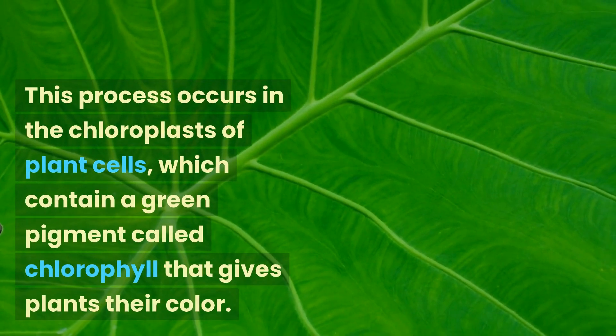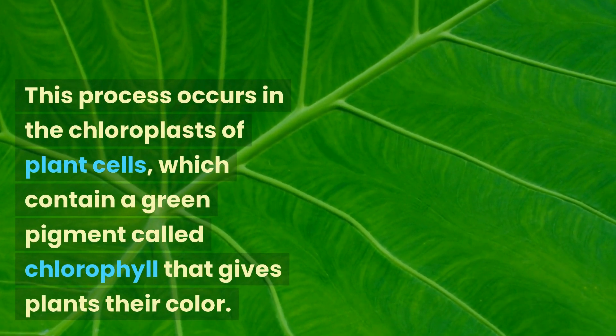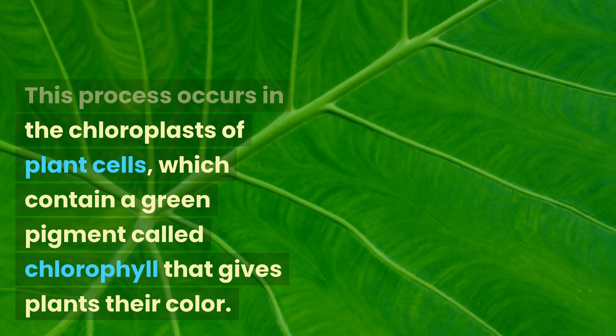This process occurs in the chloroplasts of plant cells, which contain a green pigment called chlorophyll that gives plants their color.